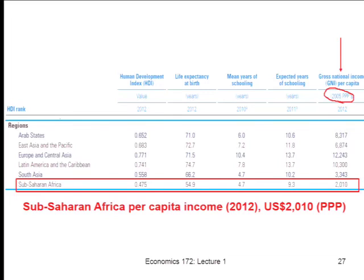All these measures are pretty correlated — Africa is sort of at the bottom of all of them. As you get richer, you get more schooling and you live longer, although it's not perfect. For instance, people in Latin America live longer than people in Europe and Central Asia — 74 years to 71 — even though they're poorer. Part of that is there's been really disappointingly low life expectancy in the former Soviet Union and Central Asia since the fall of the Soviet Union, with drops in life expectancy in many Eastern Bloc countries.